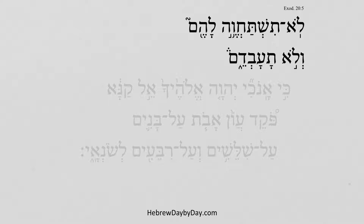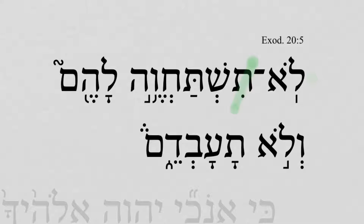Exodus 20:5a. 'Lo tishtachave lachem, v'lo ta'avadeim.' The context here continues the second commandment concerning images. You shall not bow down to them, and you shall not serve them.